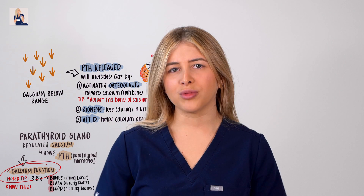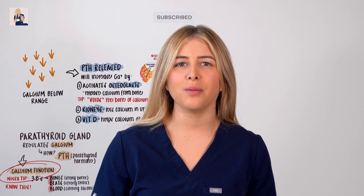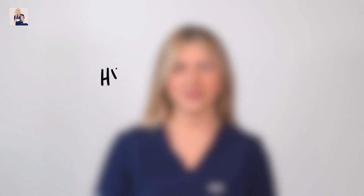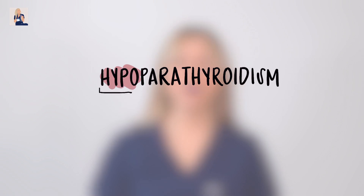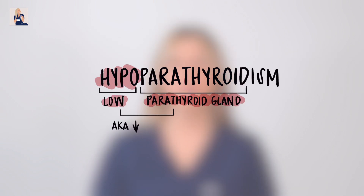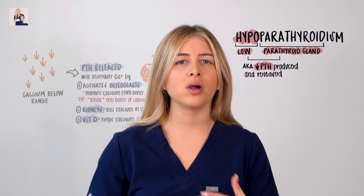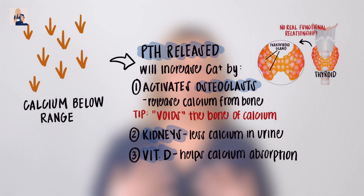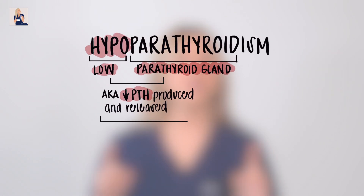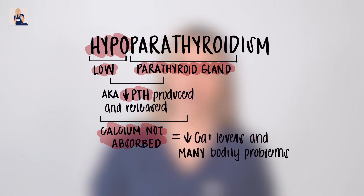Now that we know the normal function of the parathyroid gland, let's go into hyper and hypoparathyroidism. Hypoparathyroidism is the underproduction of the parathyroid gland, causing not enough parathyroid hormone to be produced and released. If we do not have any parathyroid hormone, we do not have enough calcium being absorbed in our blood, which means calcium levels drop below normal range.